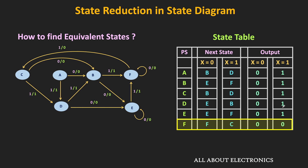As you have seen earlier, the two states are said to be equivalent if for every possible set of inputs they generate the exact same output and the same next state. Over here, the state A and the state C are equivalent states. Because for all possible sets of inputs, they have the same next state. For example, when x is equal to 0, both states will go to the B state. Similarly, when x is equal to 1, both states will go to the D state. Moreover, their outputs are also the same for x equal to 0 and 1. So we can say that both these states are equivalent, and therefore we can remove one of them.